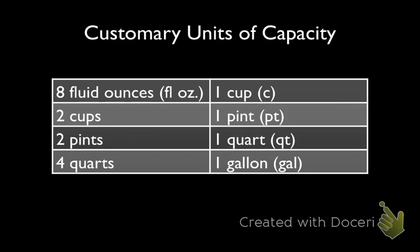Here's the table that gives us the customary units of capacity. We'll see that there are 8 fluid ounces in 1 cup, 2 cups to 1 pint, 2 pints to 1 quart, and 4 quarts to 1 gallon.